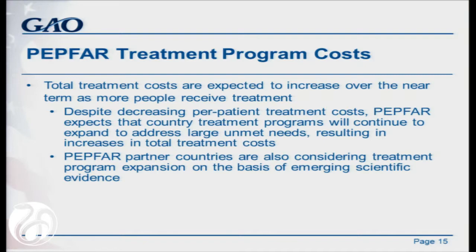There have also been changes to eligibility criteria that might affect total treatment costs. These include PMTCT and Option B Plus, to put all HIV-positive pregnant and breastfeeding women on treatment, which would raise that number to 23 million. As well as treatment as prevention, and as countries consider increasing the initiation of CD4 counts to higher than 350, that will also impact the gap between those who need treatment and those currently treated.